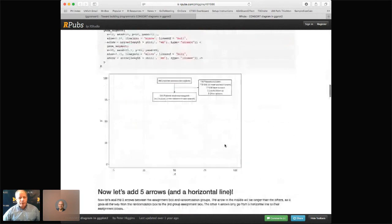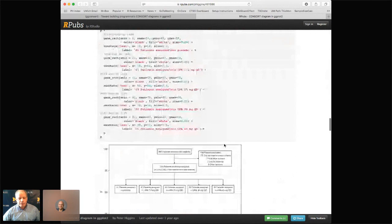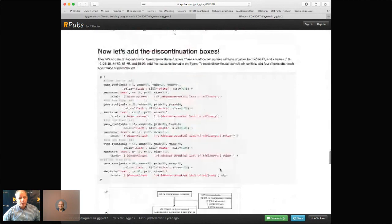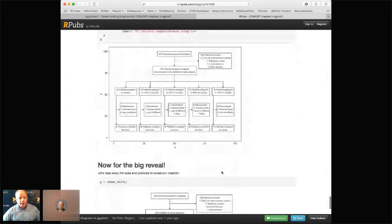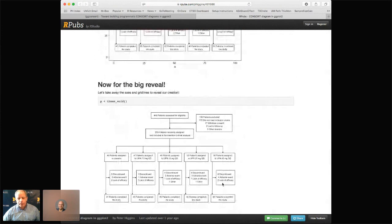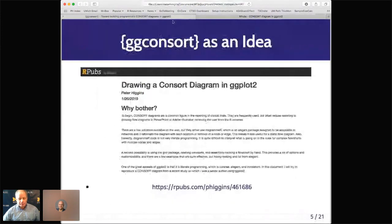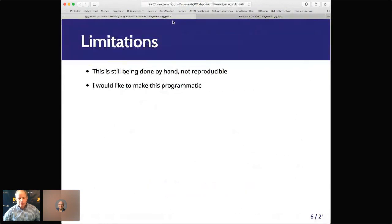But essentially, you can add your boxes and arrows, all your randomization. And by ending up with theme void, you can end up with a pretty nice looking consort diagram. And this is where I got a little bit overconfident and decided, yeah, I can do this. I can make this programmatic. Because it's not reproducible. But I'd like to get to that point.